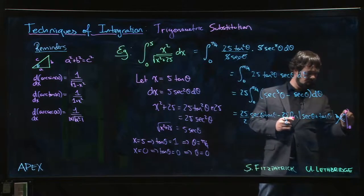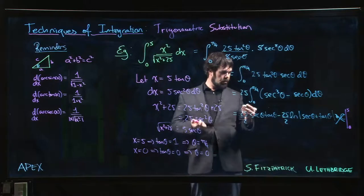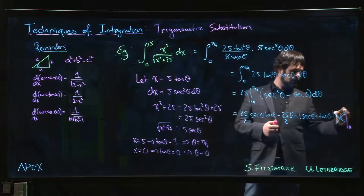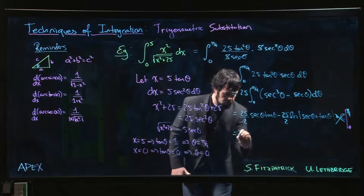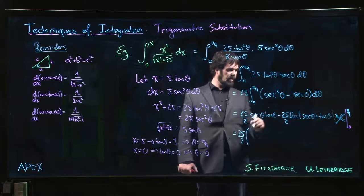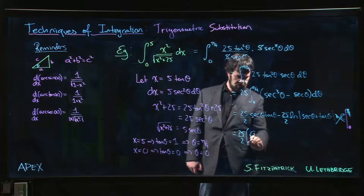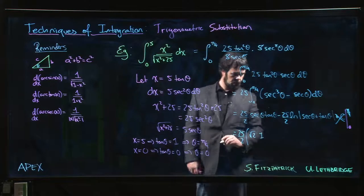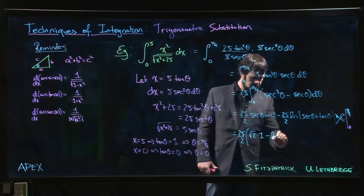But definite integral, so not plus C. We want to apply those limits, 0 to pi over 4. So 25 over 2 times secant of pi over 4, which is root 2, tan of pi over 4 is 1, minus the natural log of root 2 plus 1. That's the upper limit.